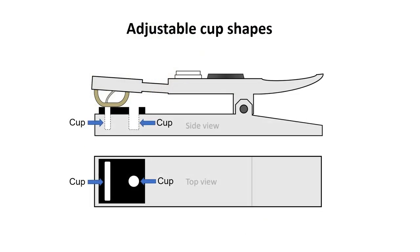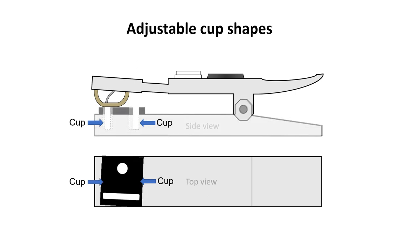The sensor head also features two separate cup shapes: a long, narrow cup suited to narrow leaf shapes, and a circular cup suited to rounder leaf shapes. The user can easily switch between these two options by rotating a section of the sensor head.